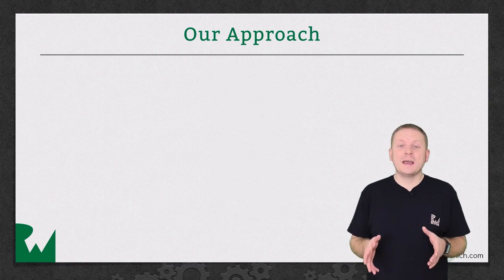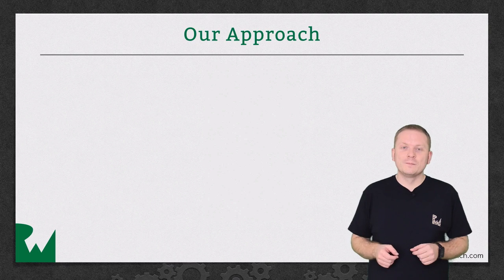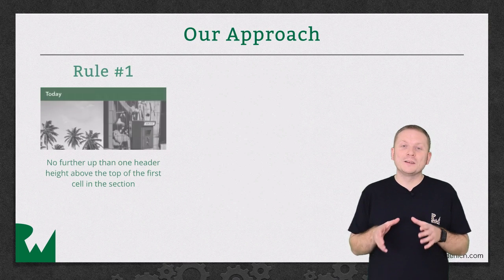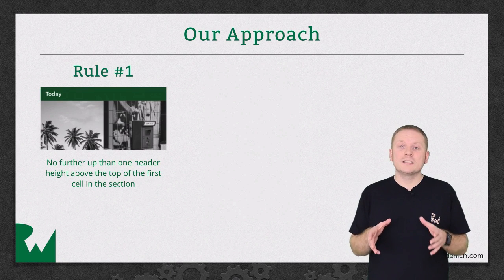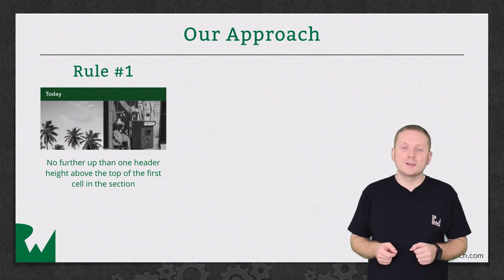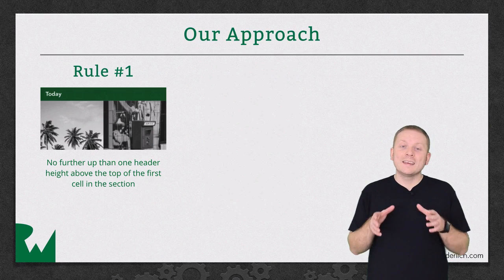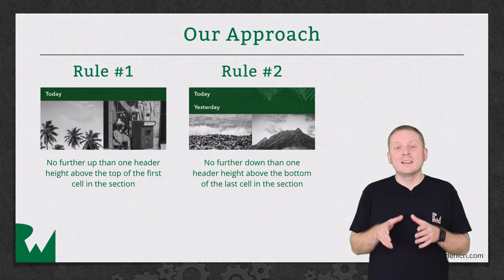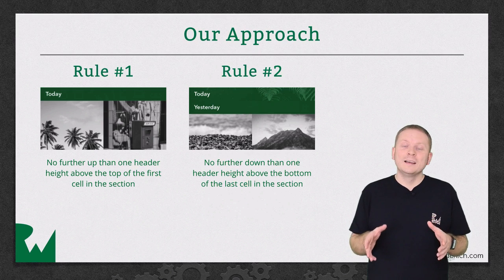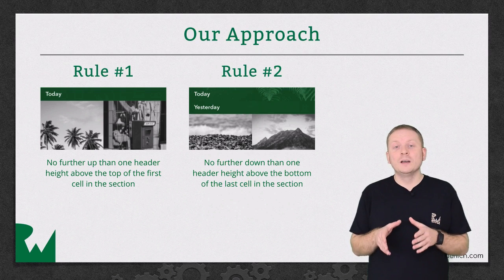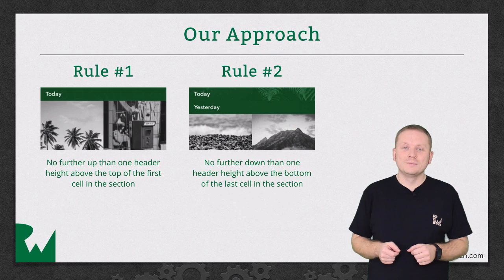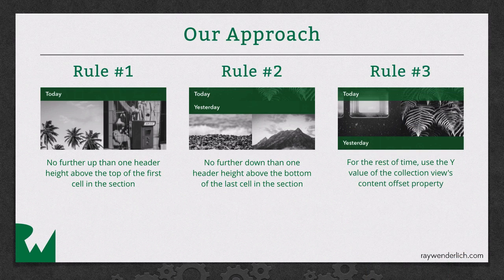In order to implement this behavior, there are three rules we must follow. The first rule of sticky headers is that the header cannot be positioned any further up than exactly one header height above the top of the first cell in that section. The second rule is that the header cannot be positioned any further down than exactly one header height above the bottom of the last cell in that section. And the third rule is that when not breaking rules 1 or 2, the header should be positioned using the Y value of the Collection View's Content Offset property.